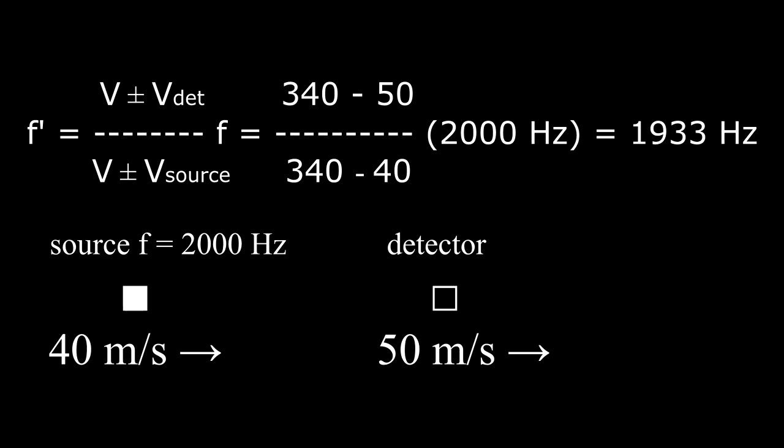Now that you've had some practice operating the Doppler shift equation, its derivation will make more sense. This equation works only for sound waves and only when the source and detector are moving along the same line. The equation will be different if one object moves at an angle to the other, and the equation is different again in the case of the Doppler effect for light waves.